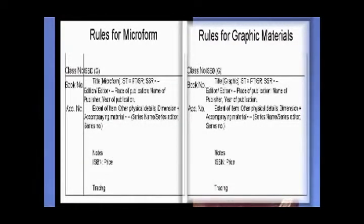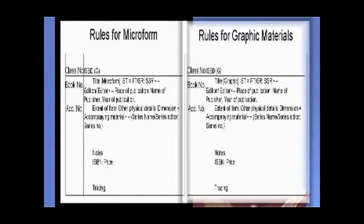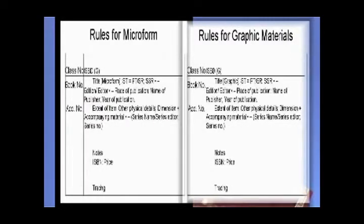For microforms and graphic materials, the choice of access follows ISBD(G), just like any other book material. After the title, use the GMD 'micro form' or 'graphic' as appropriate. Extent of item for microforms includes microfiche, microfilm reel, or aperture cards. For graphic materials, extent of item includes transparencies, slides, pictures, or art originals. Tracing follows the same approach as for book material.